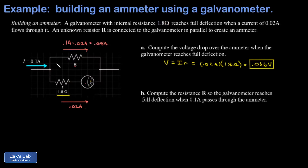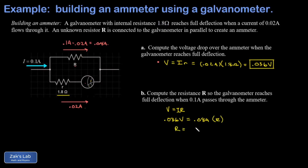Now I have the potential difference across R, which is the same as the potential difference across the lower branch: 0.036 volts. I also have the current running through that branch, 0.08 amps, so I can figure out what R is required. Applying Ohm's law — v equals ir — with v equal to 0.036 volts and current equal to 0.08 amps, I solve for R and get 0.45 ohms.